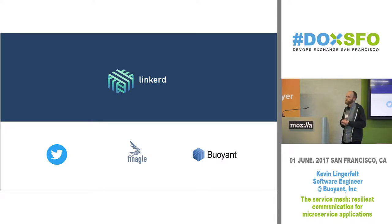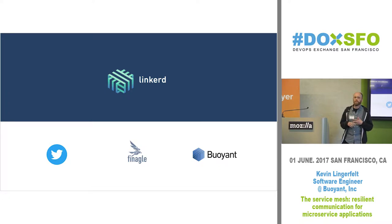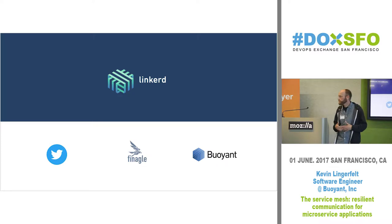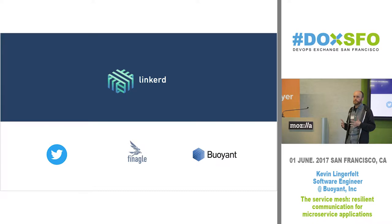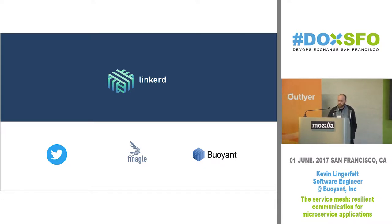The talk will be about three parts. First, we'll talk about why you might need a service mesh — why you need resiliency in a distributed system, because communication is really fundamental. Then we'll talk about how a microservice architecture built around a service mesh evolved, and what the benefits are of using one. And then I'll do a quick demo, hopefully if it all works out.